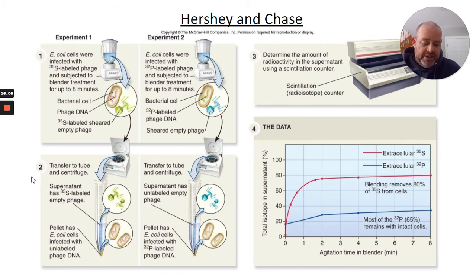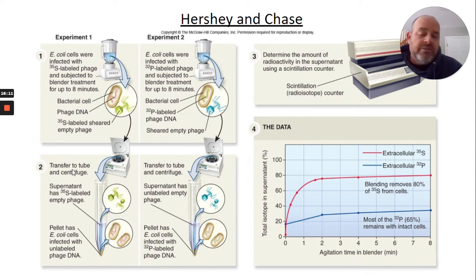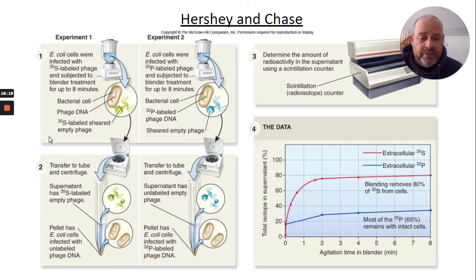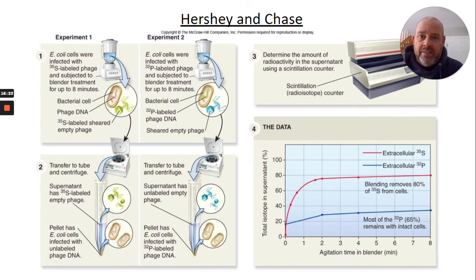It took several experiments and several sets of scientists to figure this out. This is how science goes. This chain of discovery is a perfect explanation of how all of science works — someone learns something, and then somebody else pushes that information farther, building the knowledge we have.